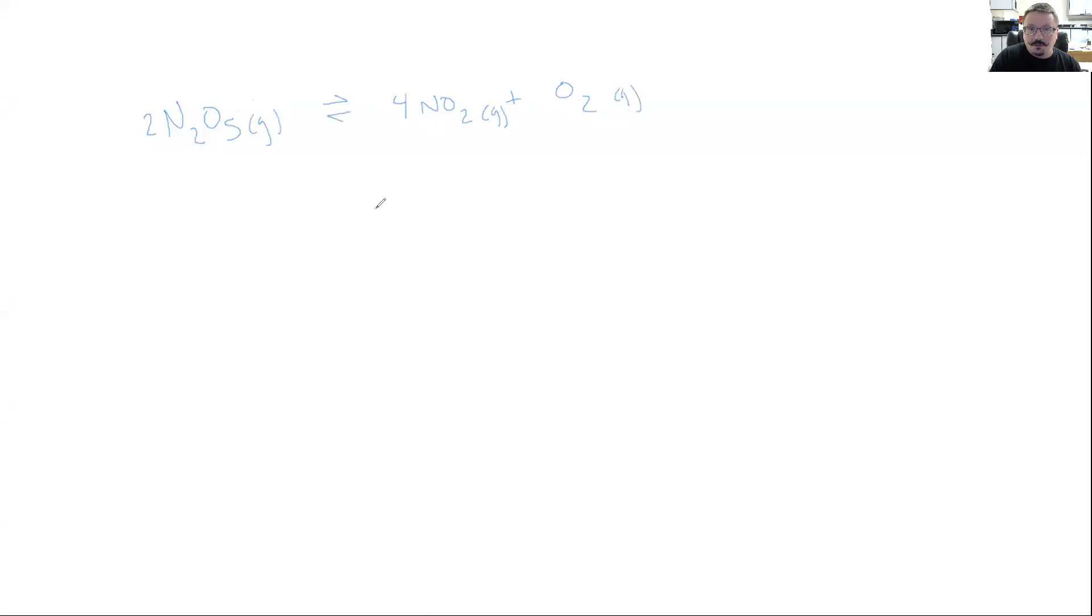So I'm going to start with my products. I put the brackets over them. That indicates concentration. Coefficient here is a 4, so I'd raise that to the fourth power. That would be multiplied by the other component, the O2, and then all over our reactants.